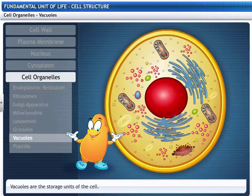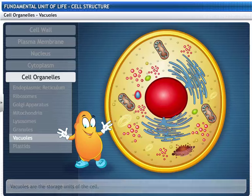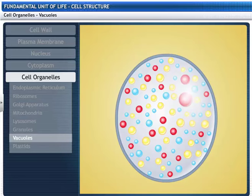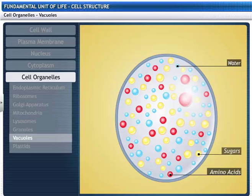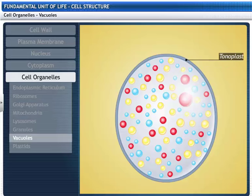Cells have storage units called vacuoles. They store water, energy, and waste products, and substances like amino acids, sugars, and proteins. The fluid contained in them is called cell sap. A vacuole is covered by a living membrane called tonoplast.